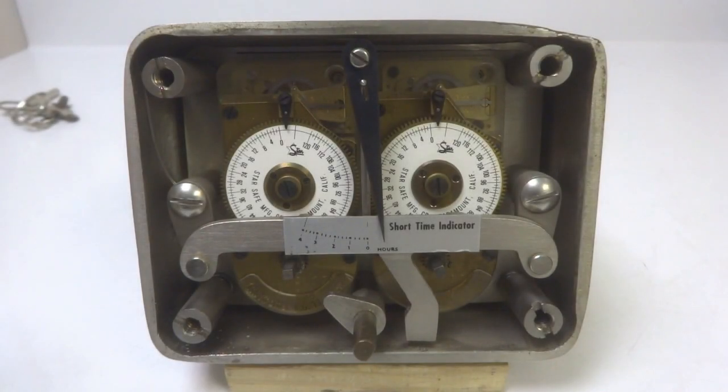This is a demonstration of a time lock that was marketed through the Star Safe Company in California. It uses two movements that are made by the Cromer Corporation from Germany.